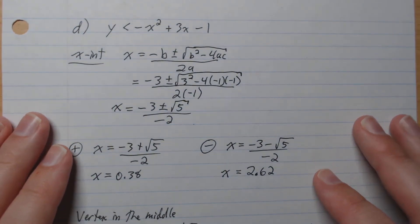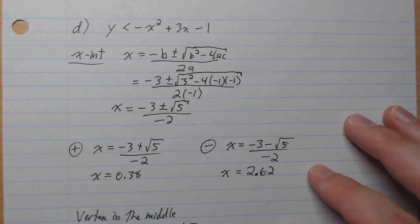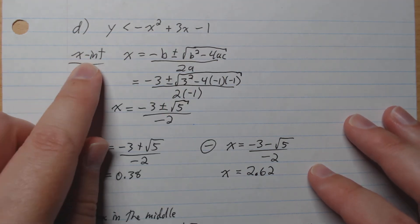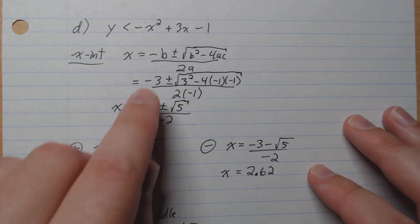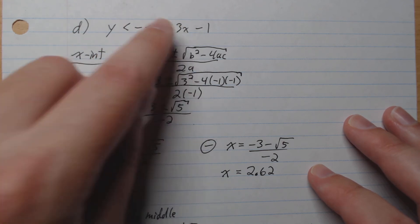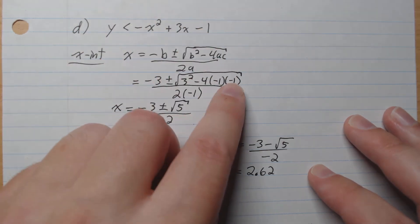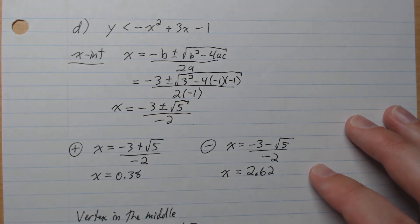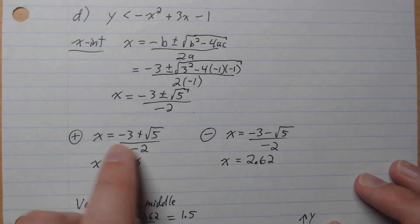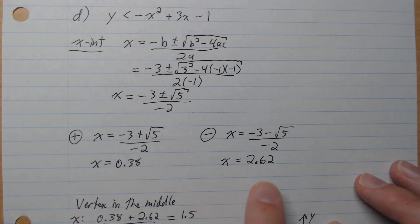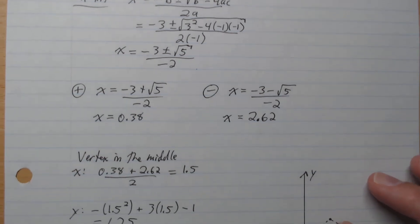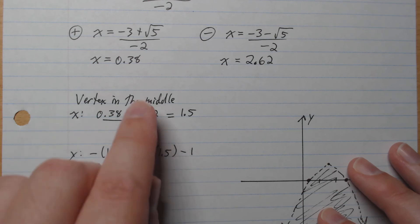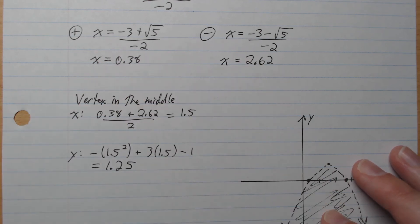D, y is less than this function like that. So first thing we're going to do is get our x intercepts. a is negative 1, b is 3, and c is negative 1 like that. Plug that in and we get two possibilities like that. 0.38 and 2.62. The vertex is in the middle of that. So we add them up, divide by 2, gives 1.5 for our x value. Plug that in to our function to get our y value of 1.25.